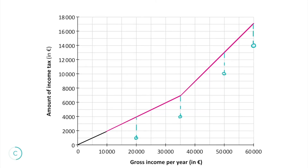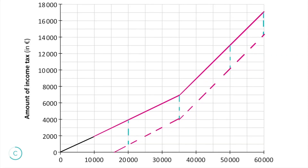As a result we get a series of new points. Since our graph is still going to be linear, we can just connect all these points together. Here's our new graph, and notice how there's still a bend in the graph at €35,000 as the slope still changes at that point.